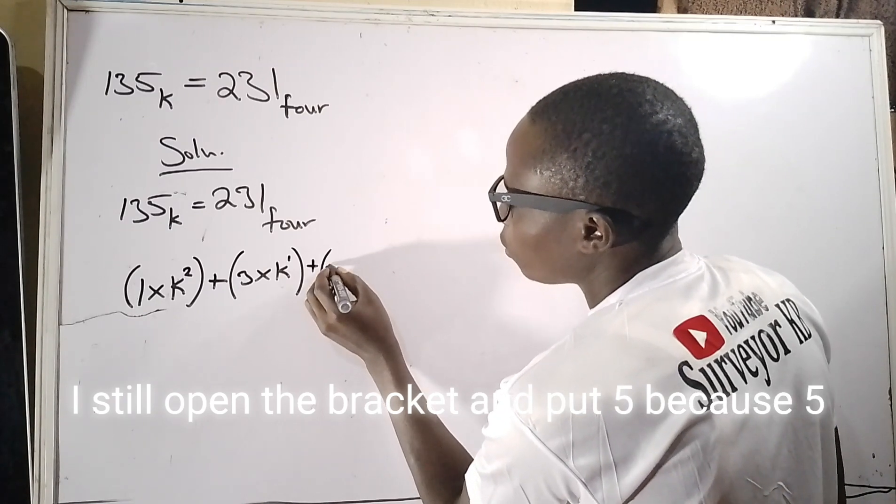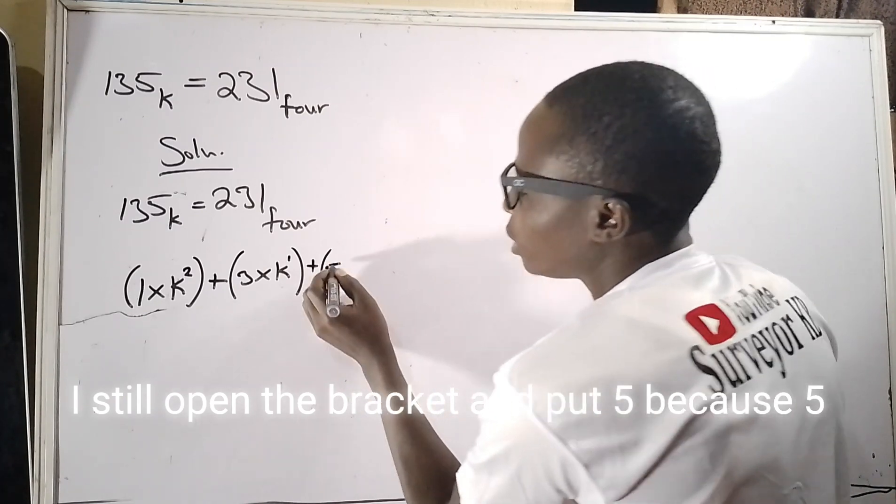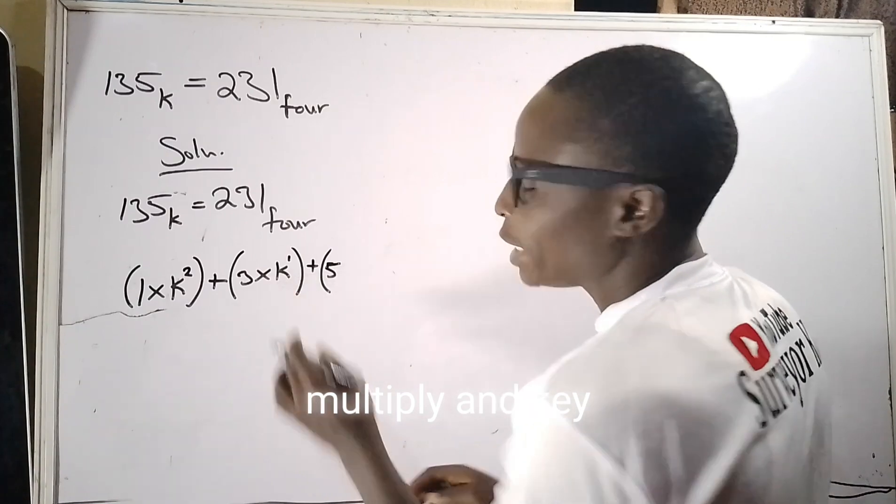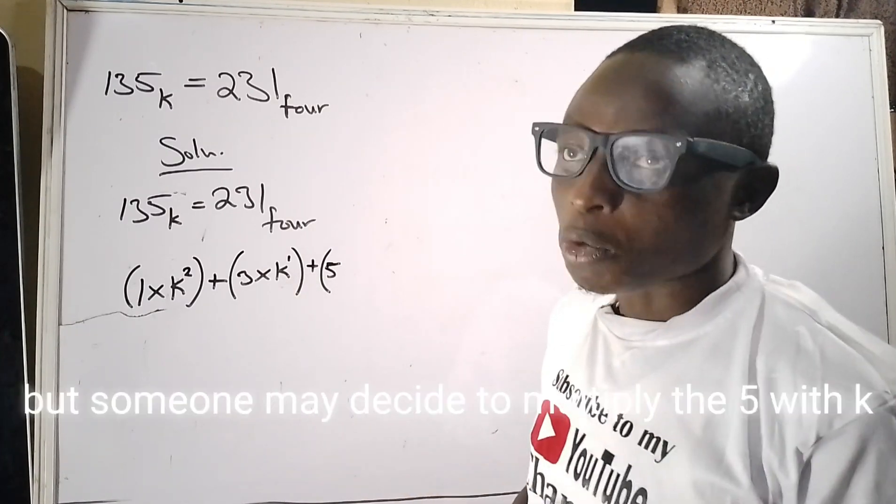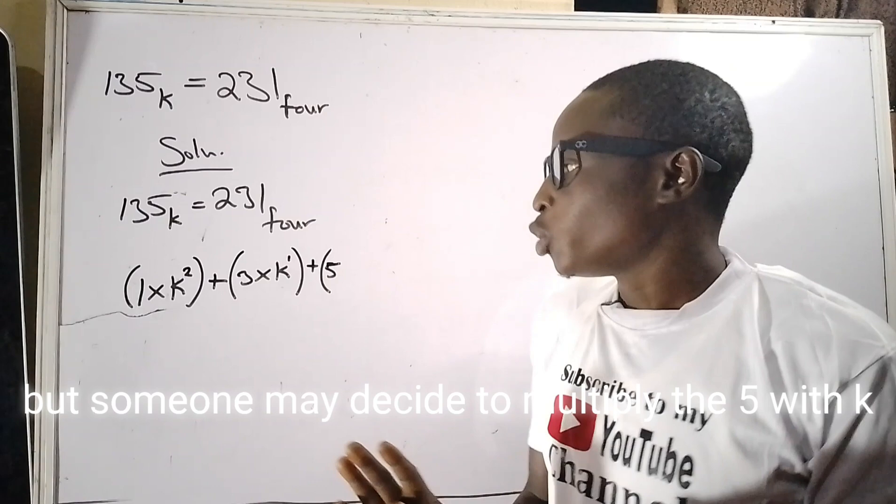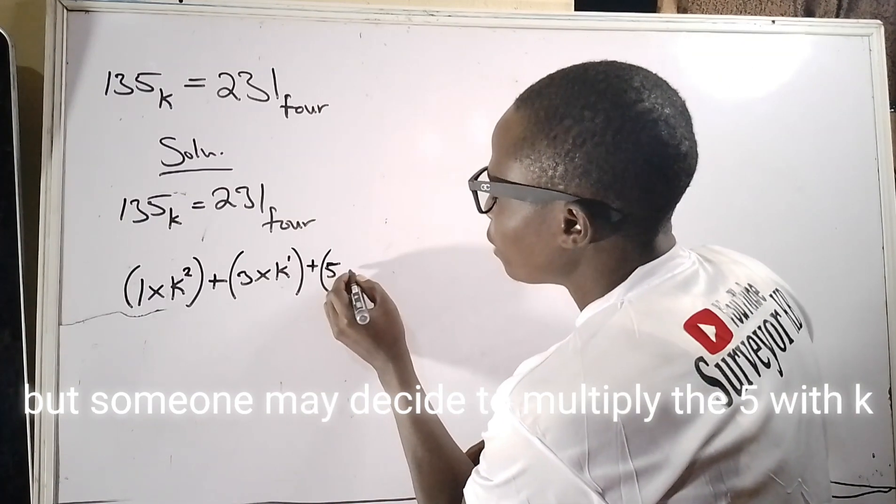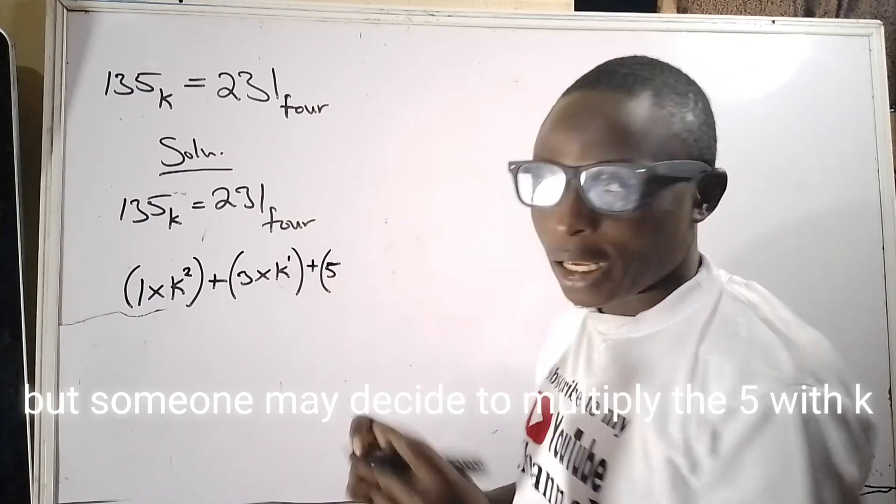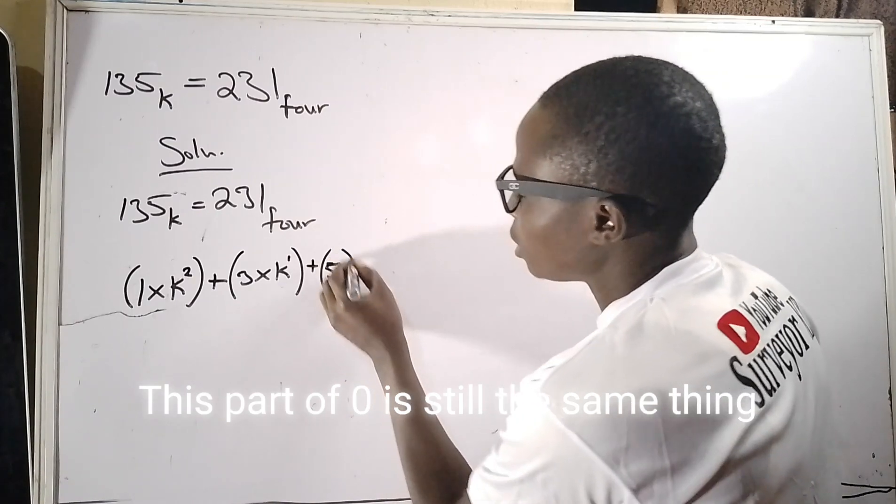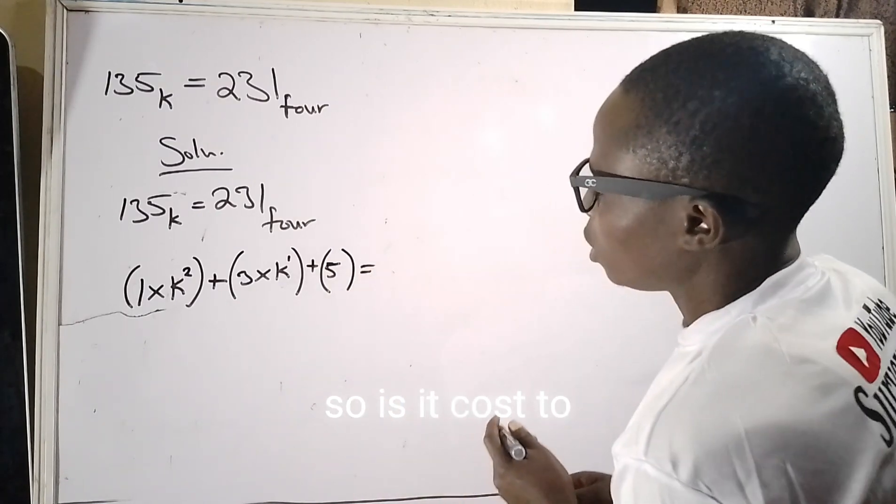I'm done with that. I'll still open the bracket and put five because five multiplying k raised to the power of zero is still five, but someone may decide to multiply the five with k raised to the power of zero - it's still the same thing.